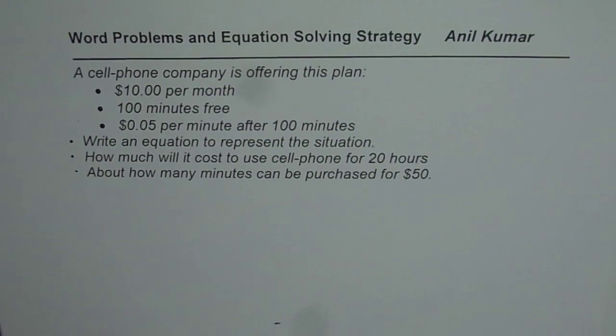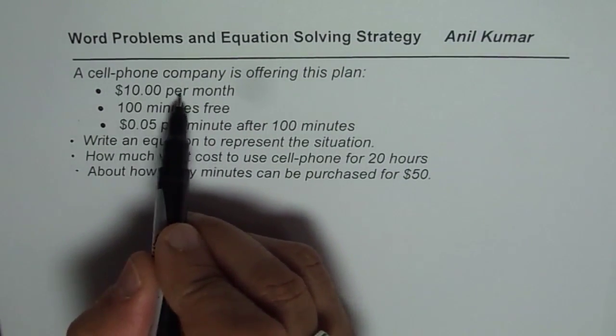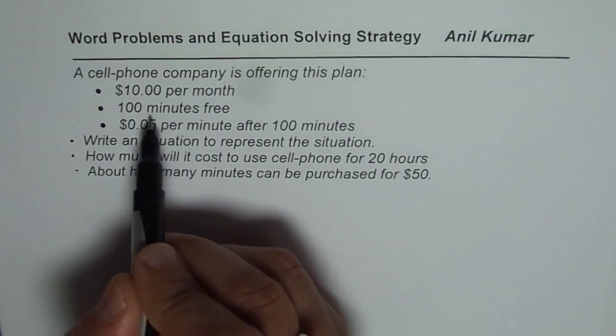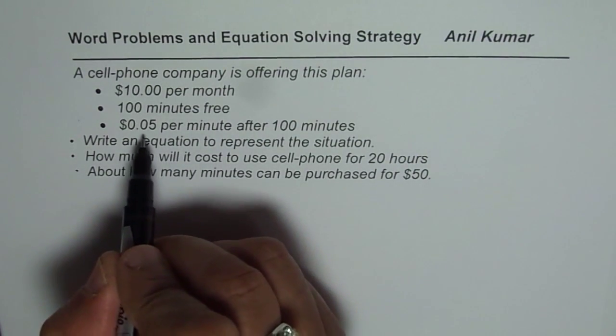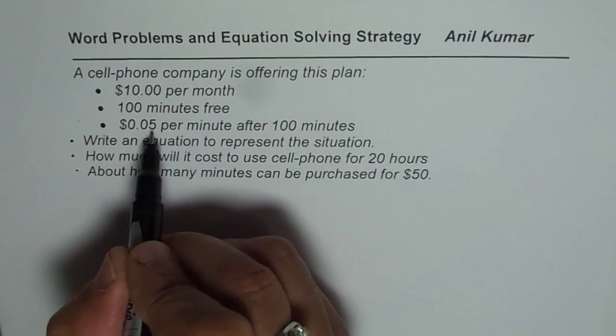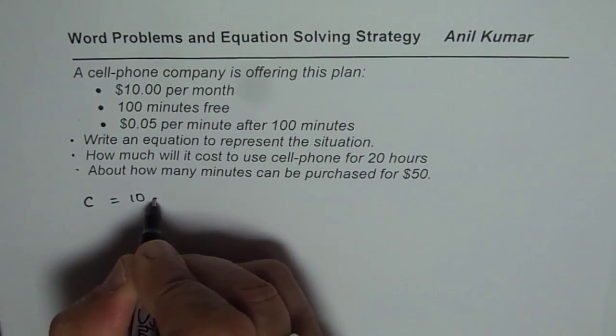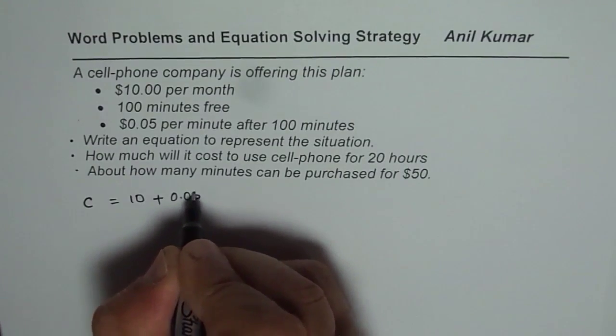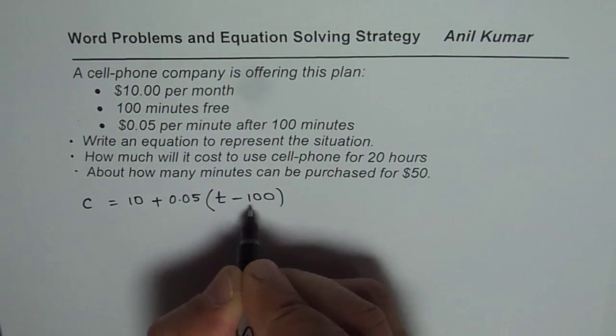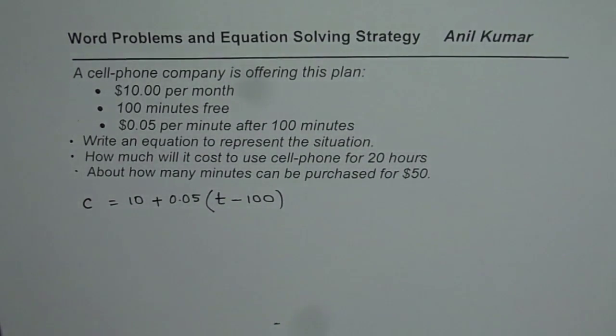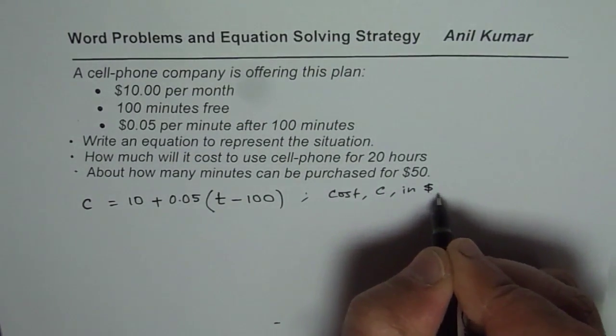Let us first try to form an equation for the given condition. It says a cell phone company is offering this plan - $10 per month. That is the fixed cost in which 100 minutes is included, 100 minutes are free. Now for every additional minute, that means more than 100, you need to pay 5 cents. So that gives us the cost, let us say C is the cost, then cost is equal to the fixed cost of 10 plus 50 cents, that means 0.05 on every minute. So let us say T is time in minutes.